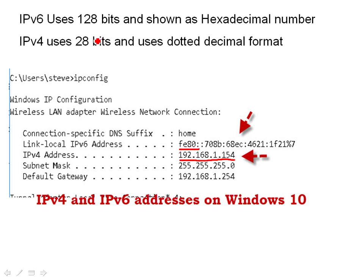IP 6 uses 128 bits and we usually represent them as a hexadecimal number, and you can see that here — they're split into blocks of 4, each separated by a colon as shown here. IP 4 uses 32 bits and we use 4 blocks of 8 separated by a decimal, so it's known as a dotted decimal format. You can see that here: 192.168.1.154.